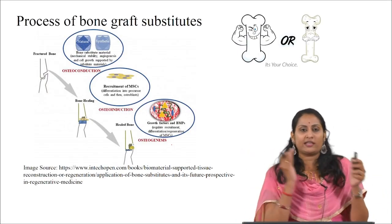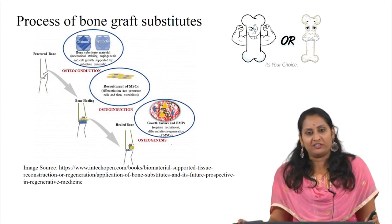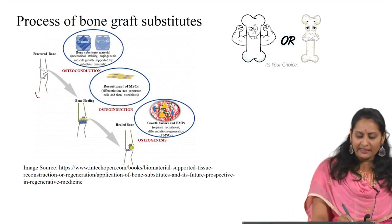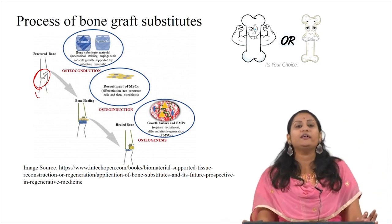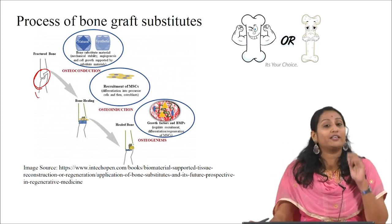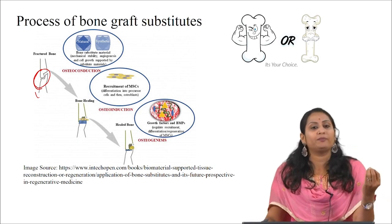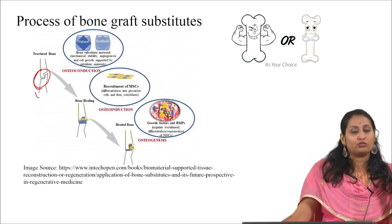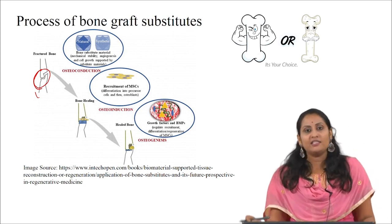Combining scaffolds, cells, and growth factors leads to the development of an ideal bone graft substitute. We first need to select the right base material — either natural or synthetic polymer — which must be mechanically stable, angiogenic, and supportive of cell growth. The scaffold can be natural or synthetic, but it should be non-toxic, mechanically stable, and have ideally interconnected porosity.